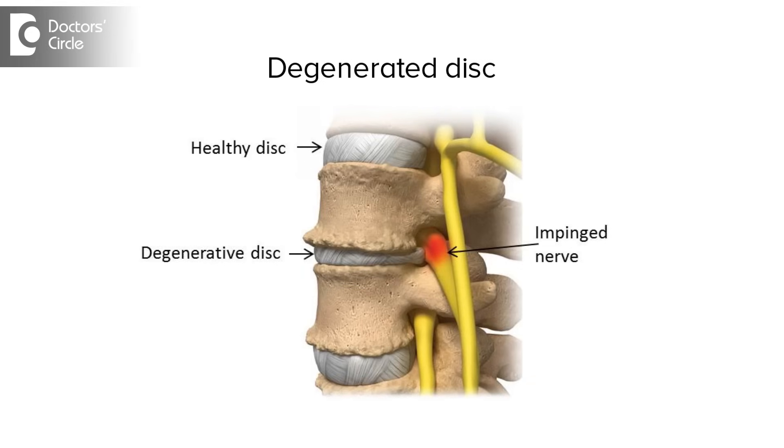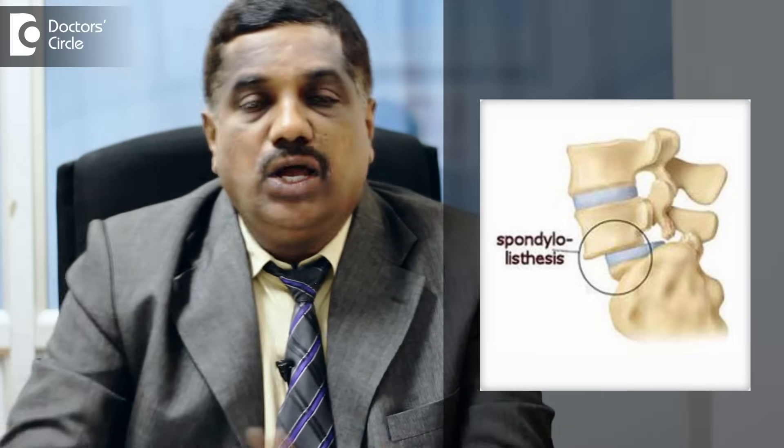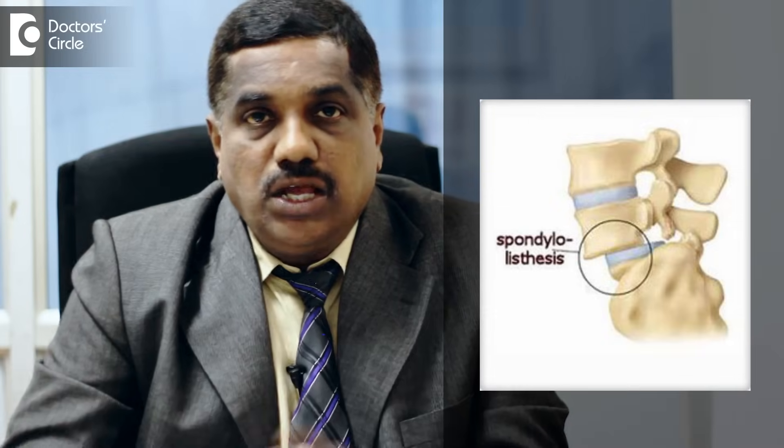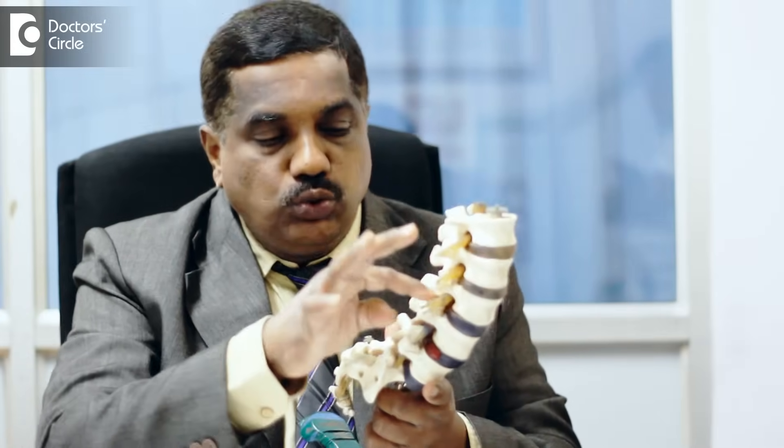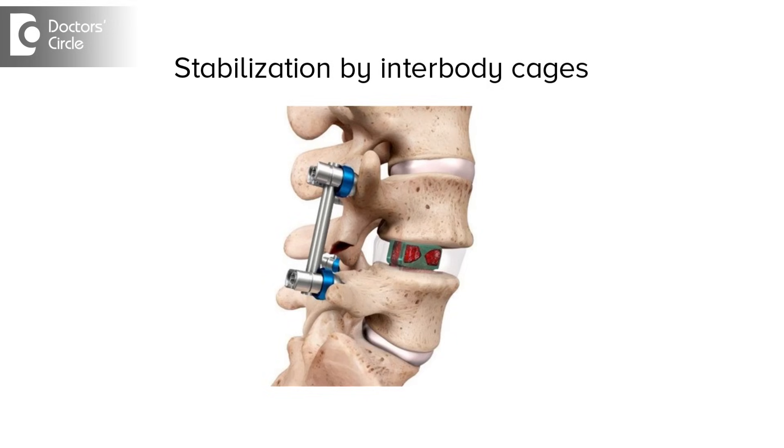Sometimes when the disc is degenerated and very weak, when we take an X-ray — a flexion X-ray or extension X-ray, like bending X-rays — if there is a movement of the bone, not the disc alone, where one bone overrides over the other, that stage we call it instability or listesis. In such cases, we have to stabilize the segment by putting screws, rods, and interbody cages in between the vertebral bodies, and we have to fuse the segment.